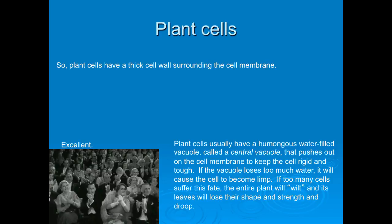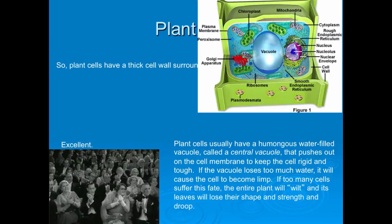Plant cells have a thick cell wall which surrounds its membrane. Plant cells usually have a water-filled vacuole called the central vacuole, that pushes out on the cell membrane to keep the cell rigid and tough. If the vacuole loses too much water, it will cause the cell to become limp. If too many cells suffer this fate, the entire plant will wilt and its leaves will lose their shape and strength. The vacuole is very large, and its function is to store food and water, and it helps give the cell shape by applying internal pressure.